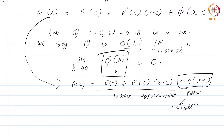We have introduced the definition of the derivative and seen two interpretations: one geometric, in terms of tangent lines, and one algebraic, in terms of linear approximations. We will focus on this second interpretation. This is a course on real analysis, and you have just watched the module on the definition and interpretation of the derivative.